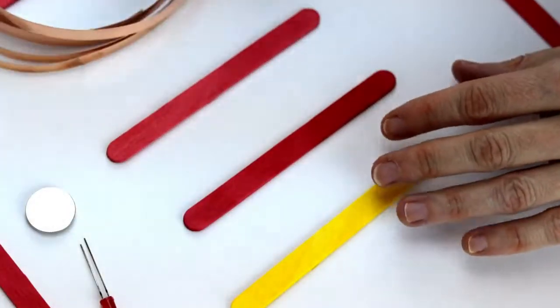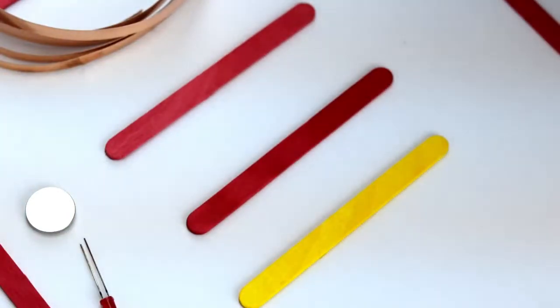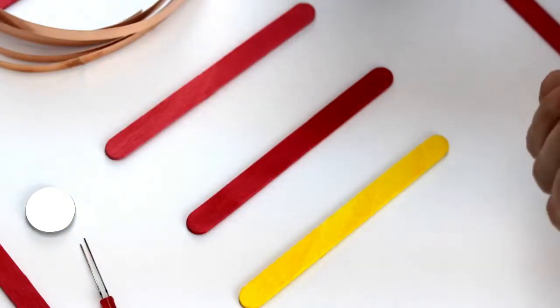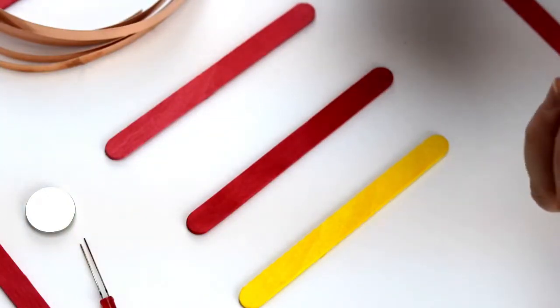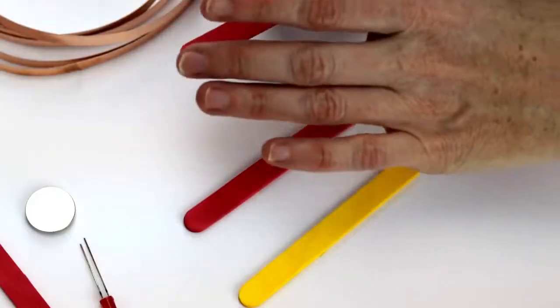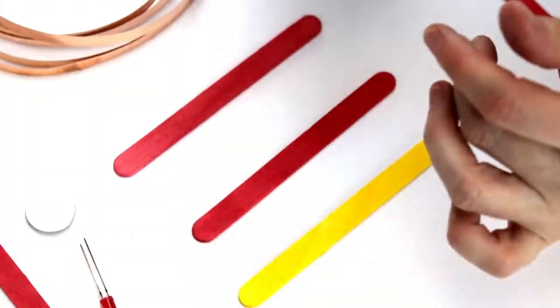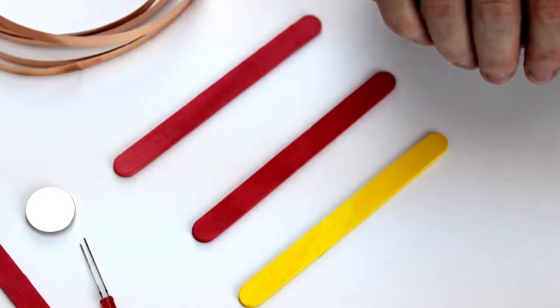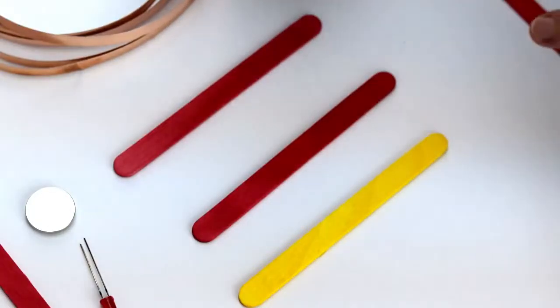So what we're going to do first is our wand is going to be created using three popsicle sticks to do our circuit. One of them is going to be our center and I'm going to probably make my center the yellow one. And the two outside ones will be red, so it's a little bit more Gryffindor themed. One of these is going to have a switch on it, so you're going to be able to swing your wand around, cast your spells with your swish and your flick and lumos and you'll close the circuit and your light bulb will turn on on your wand, so your wand will light up.